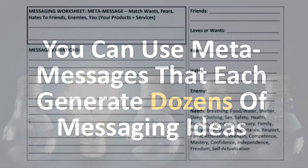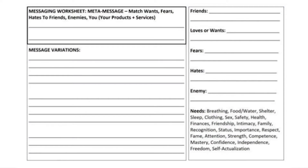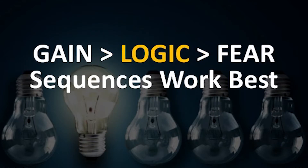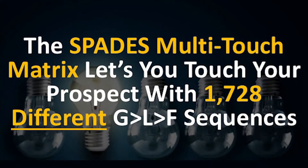I'll give you a blank one so you can do this too. Next, we want to sequence these messages to maximize conversions. Throughout billions of emails we've sent, a sequence that talks about a gain, then addresses some logic, and then stirs up some emotional fears works best. So we created a multi-touch messaging matrix that gives you 1,728 different types of gain, logic, and fear sequences.